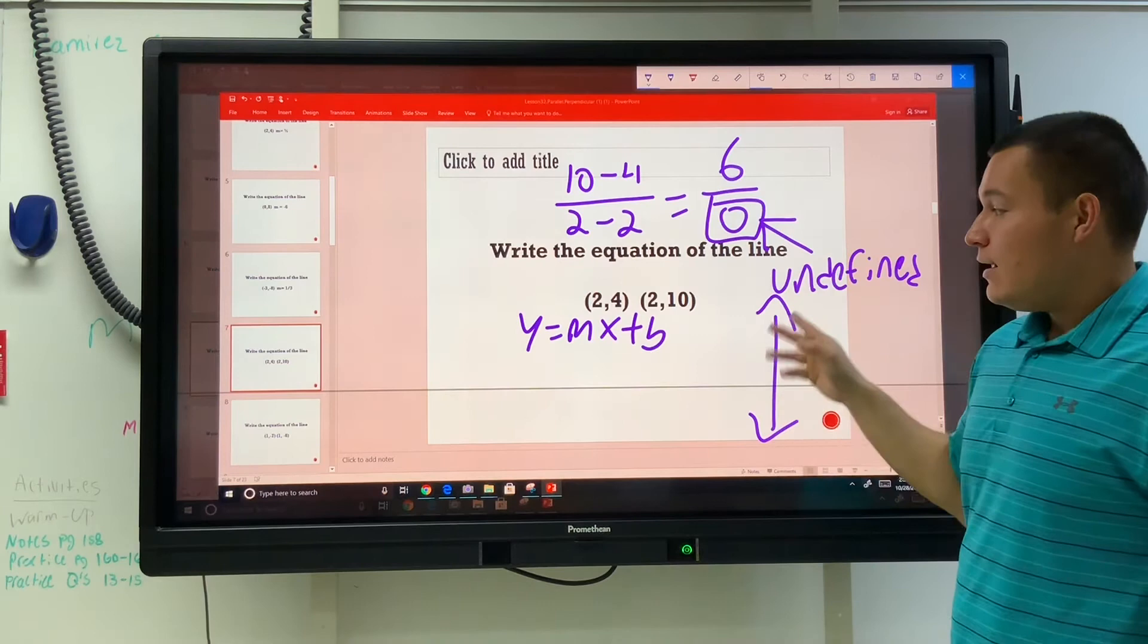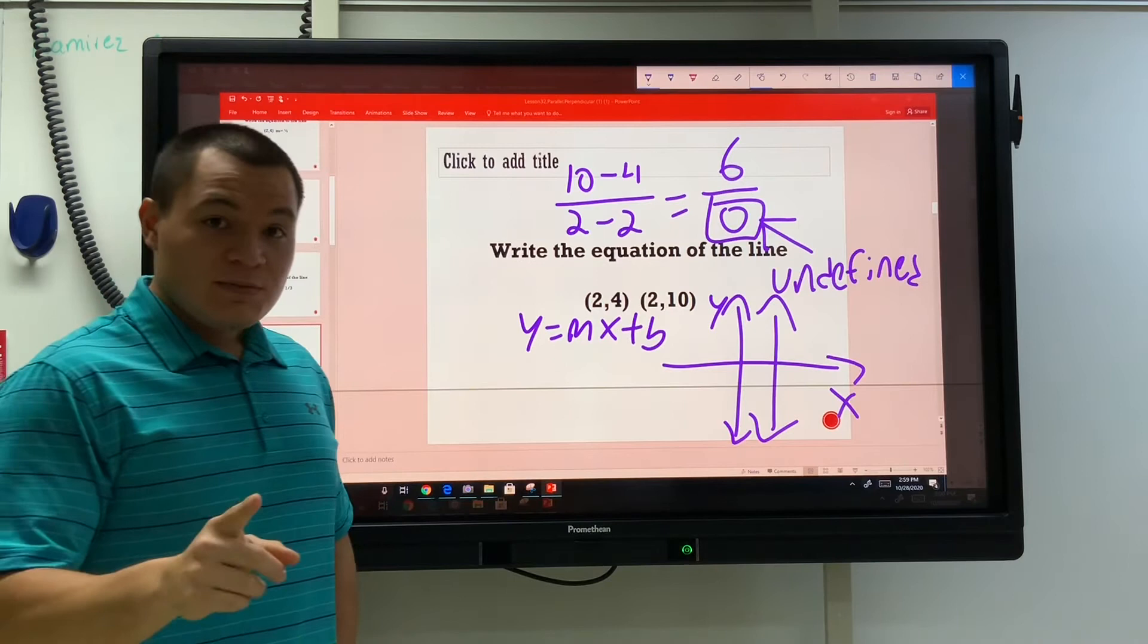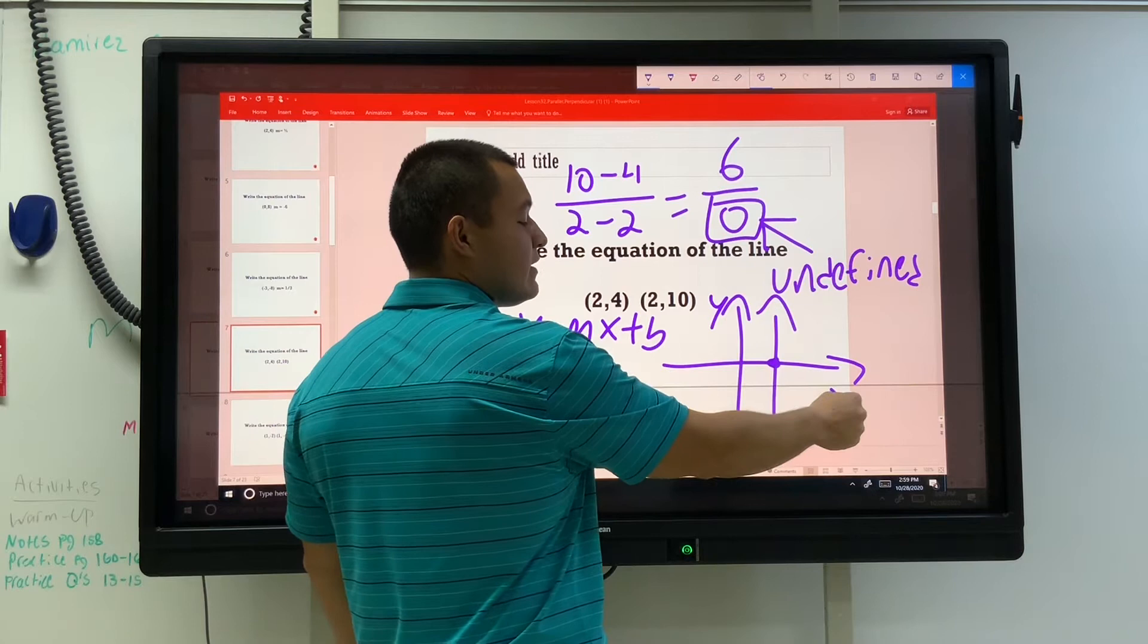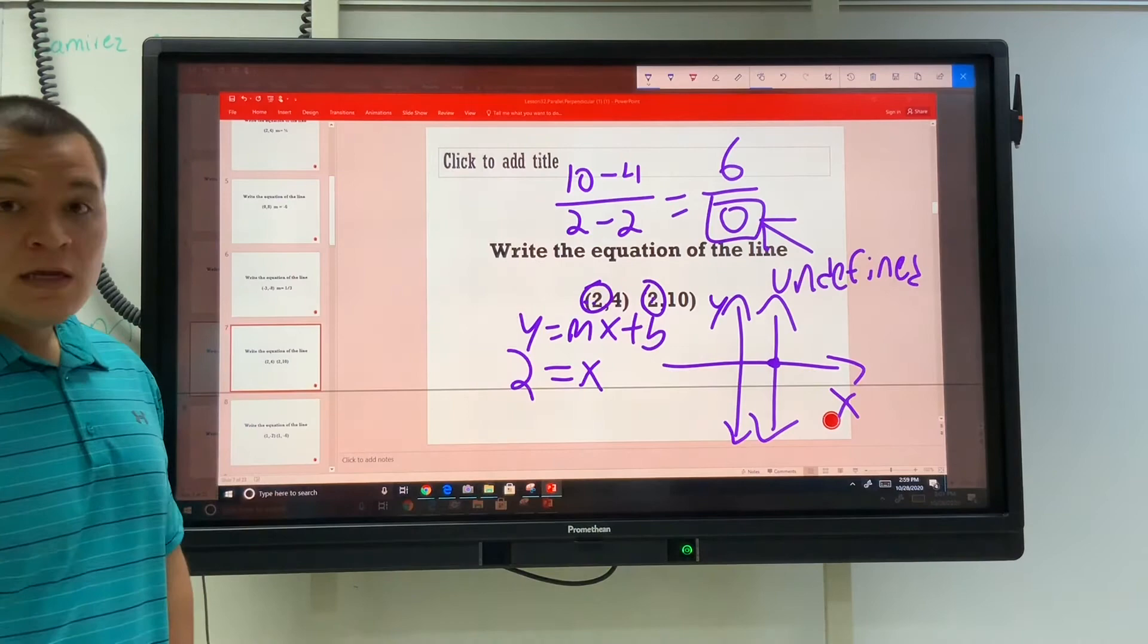That means that this is going to be a vertical line. It's going to be straight up and down. If this line is straight up and down and we put it on the axis, x and y, then the only number that matters is this number. And that number is an x, which means our equation is x equals that number, which is 2.